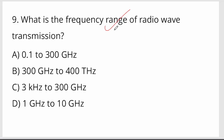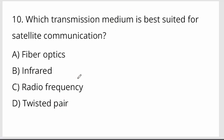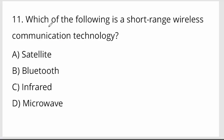What is the frequency range of radio wave transmission? Radio wave transmission frequency range is 3 kilohertz to 300 gigahertz. Which transmission medium is best suited for satellite communication? That is radio frequency.